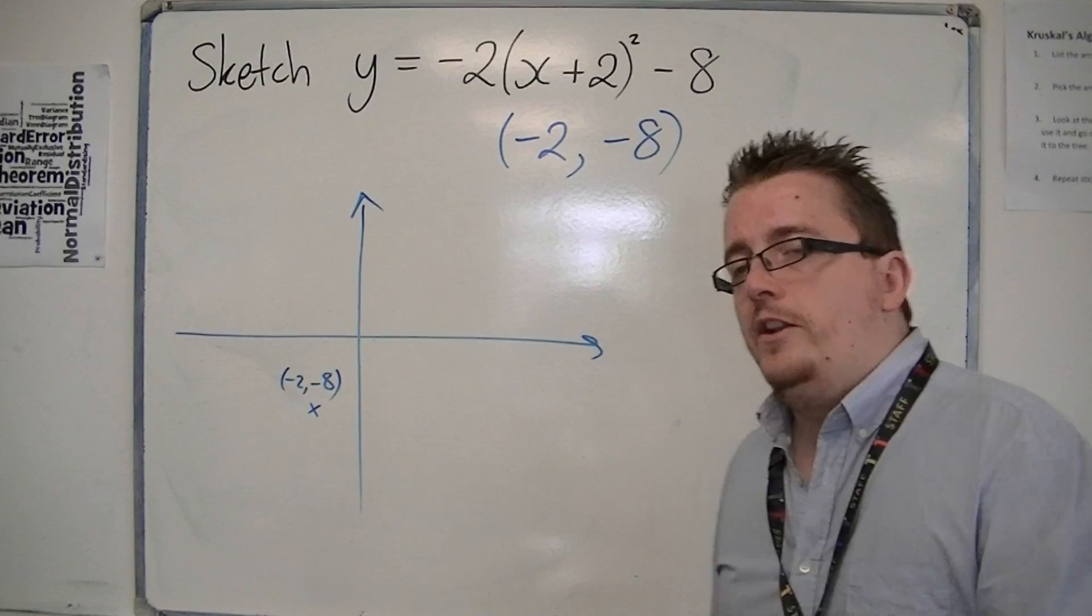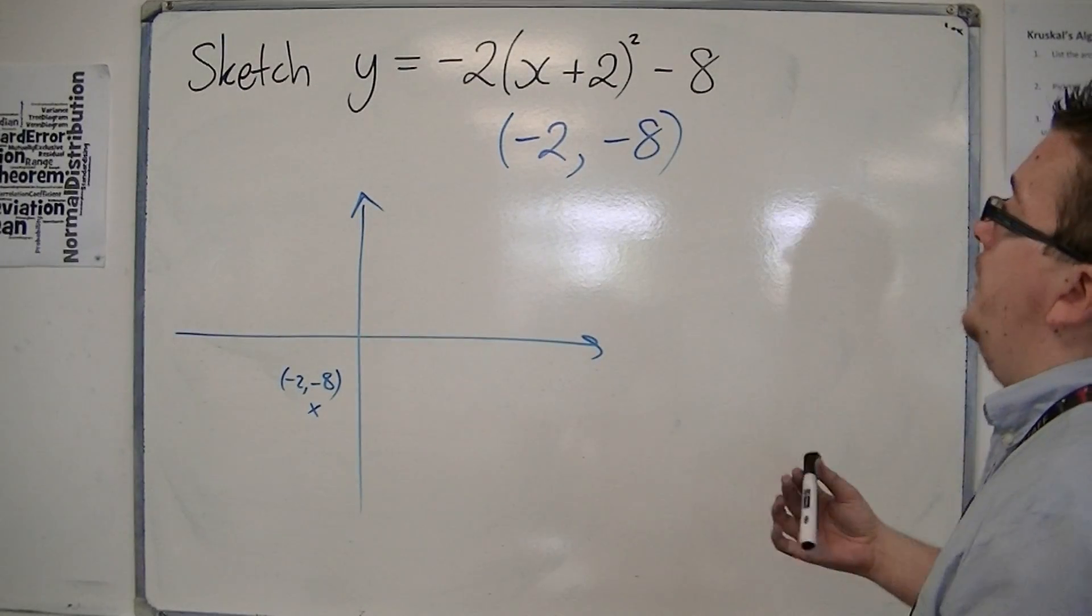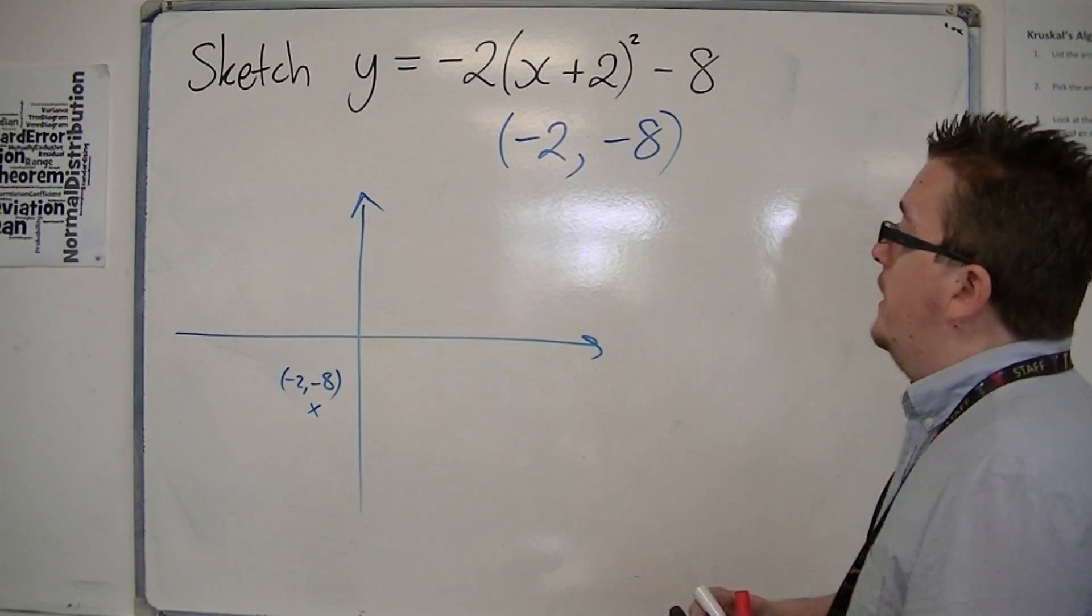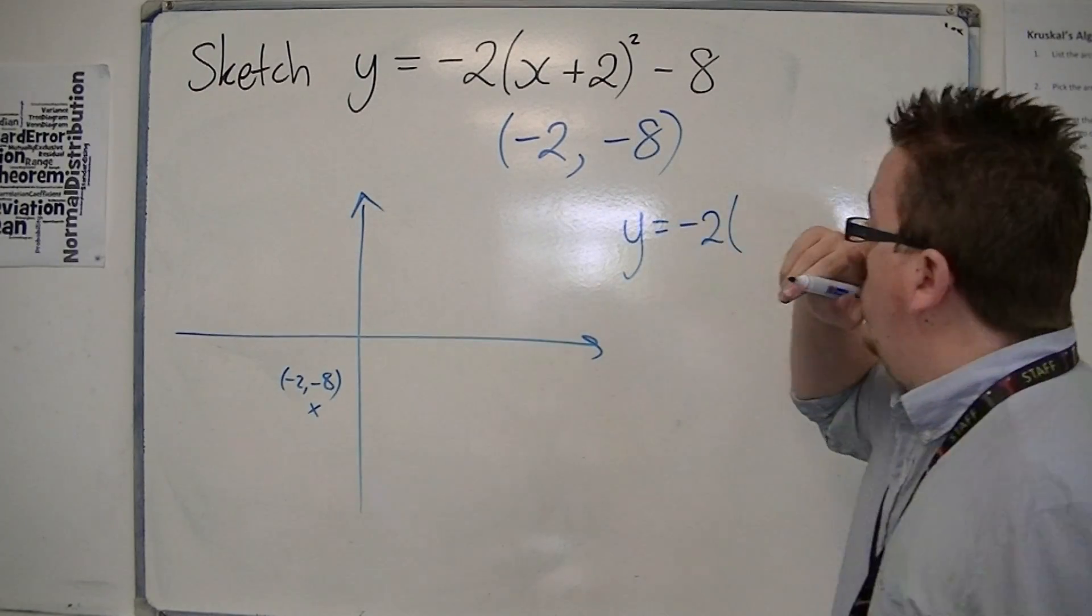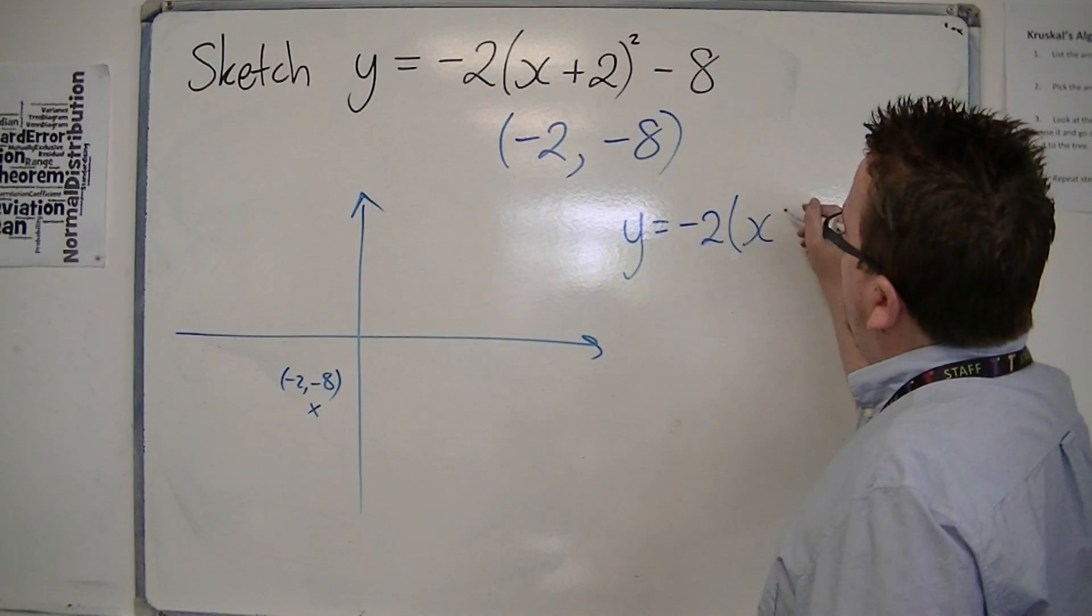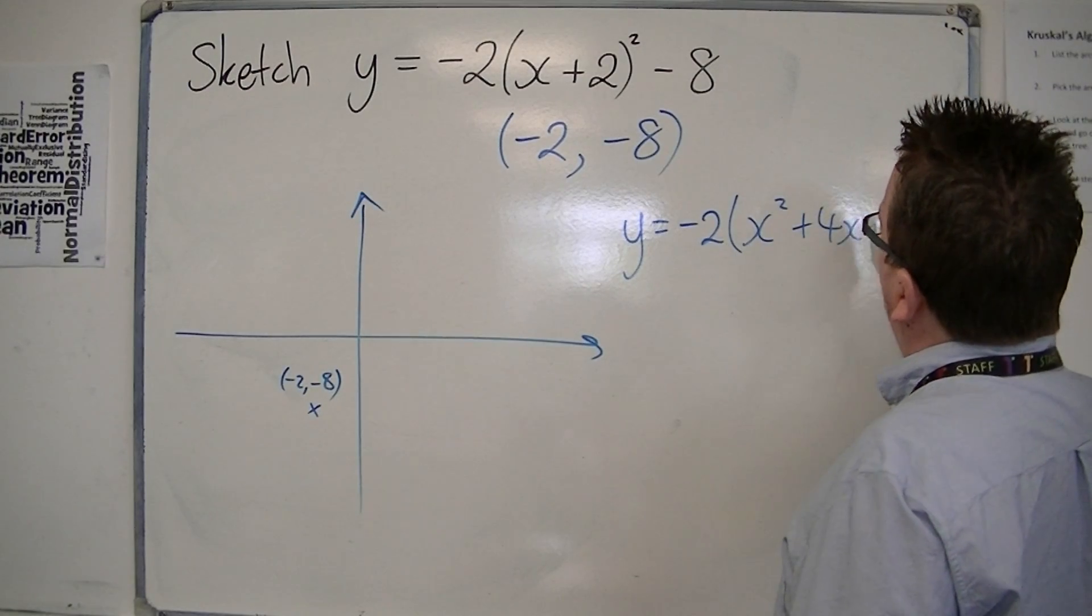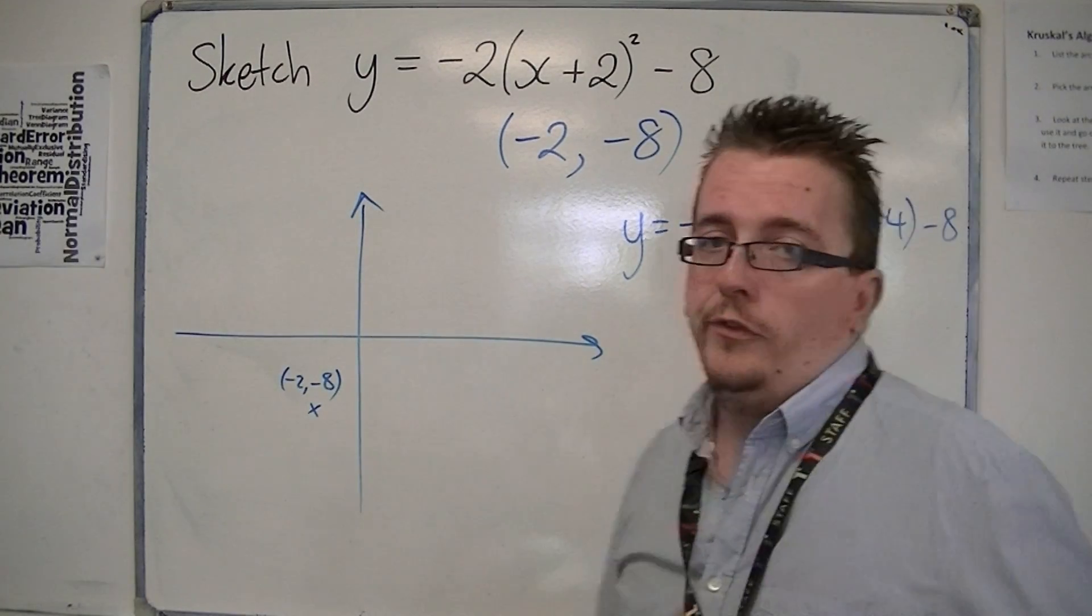I also need to figure out where it crosses the y-axis, and to do that, I need to multiply out the brackets as usual. So we've got y equals—I'm going to leave that minus 2 there—multiply out the brackets: x squared plus 4x plus 4, and I've got that take away 8 on the outside.